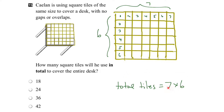Now what if we didn't know what 7 times 6 was, or we forgot? No problem. Let's count the number of tiles in a row: 1, 2, 3, 4, 5, 6, 7 tiles. So each of the 6 rows would have 7. We can simply add them up: 7 plus 7 plus 7 plus 7 plus 7 plus 7. That gives us 7 is 14, plus 7 is 21, plus 7 is 28, plus 7 is 35, plus 7 is 42.